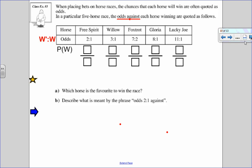Okay, I want to know which horse is the favorite to win the race. Well, I can't tell myself just looking at it. So I want to compare them using probability. So I want to know which one has the best chance to win. So I'm going to look at the probability of winning, which according to odds against will be my second number. So free spirit would be one, willow would be one, foxtrot is two, Gloria is one, lucky Joe is one. Now probability has a total and the total for probability is winning plus not winning. So I would do two plus one is three, three plus one is four, seven plus two is nine, eight plus one is nine, and 11 plus one is 12.